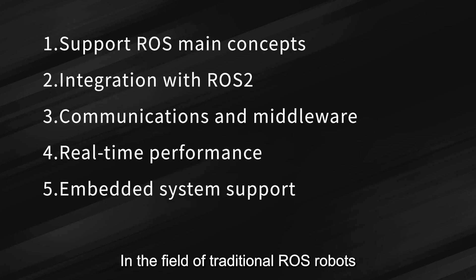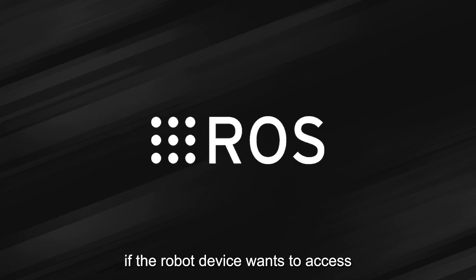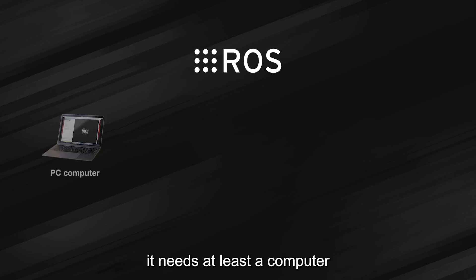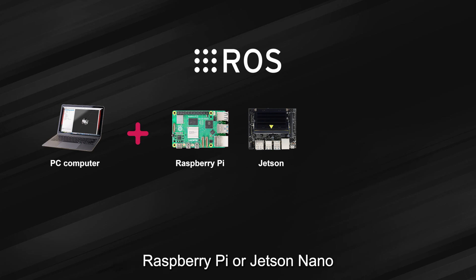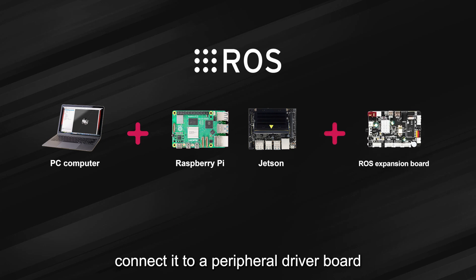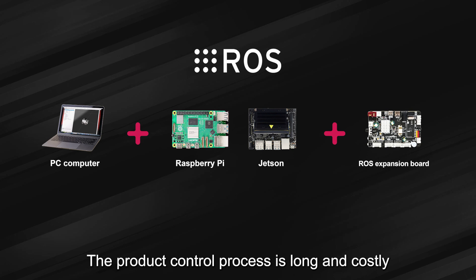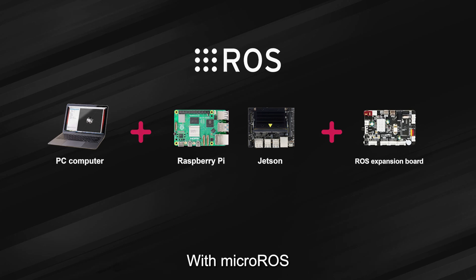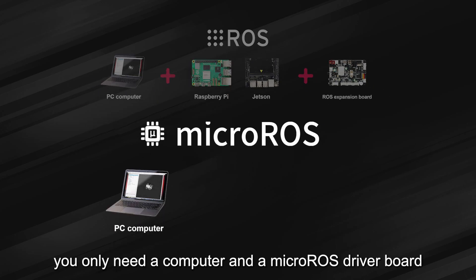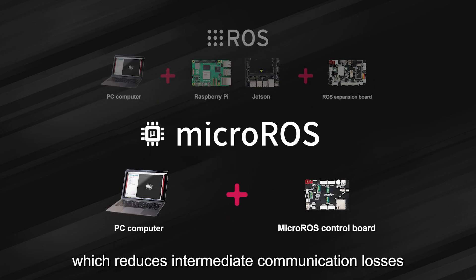In the field of traditional ROS robots, if the robot device wants to access the ROS development environment, it needs at least a computer, a development board that can run ROS such as Raspberry Pi or Jetson Nano, and a ROS expansion board, then connect it to a peripheral driver board to control the robot. The product control process is long and costly, and real-time performance cannot be guaranteed.